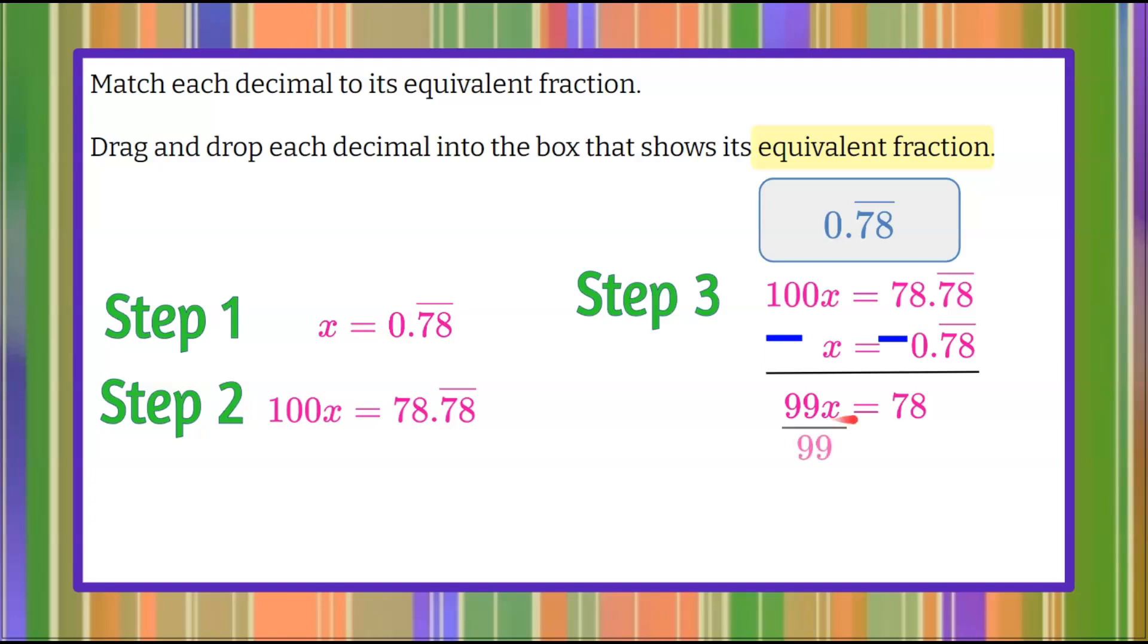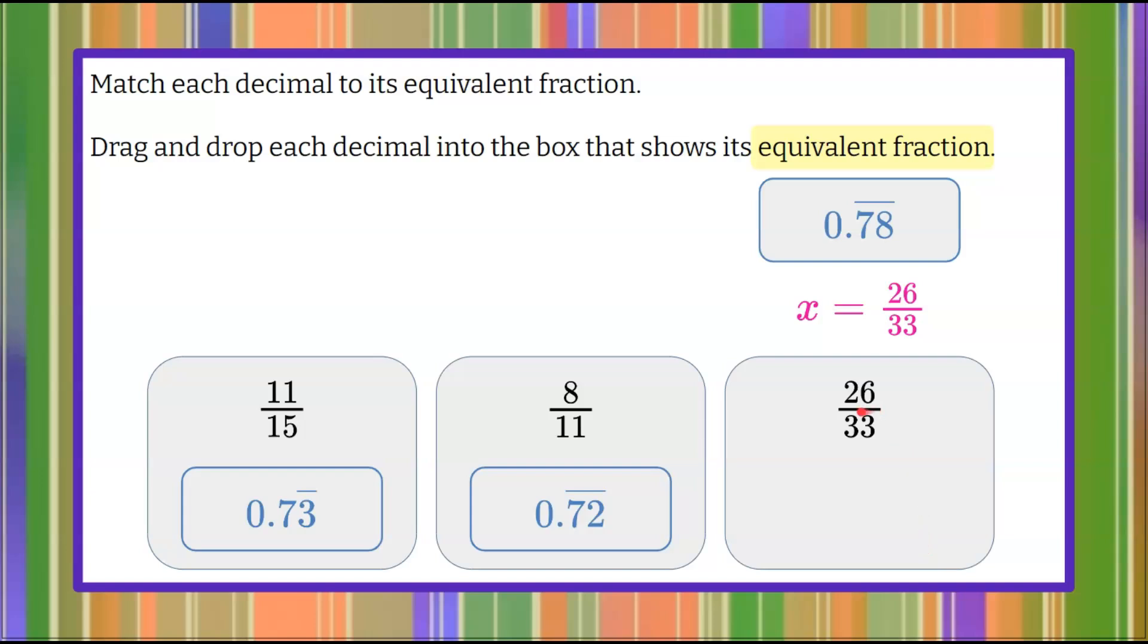To solve for x, we're going to divide each side by 99. 99 divided by 99 is 1, leaving me x. 78 and 99 are both divisible by 3. 78 divided by 3 is 26. And 99 divided by 3 is 33. So 26 over 33 is equivalent to 0.78 repeating.